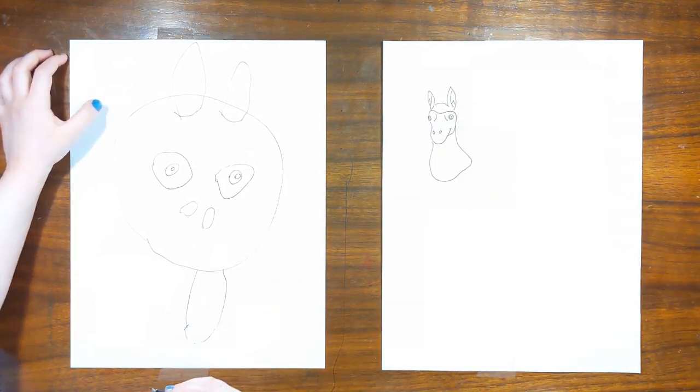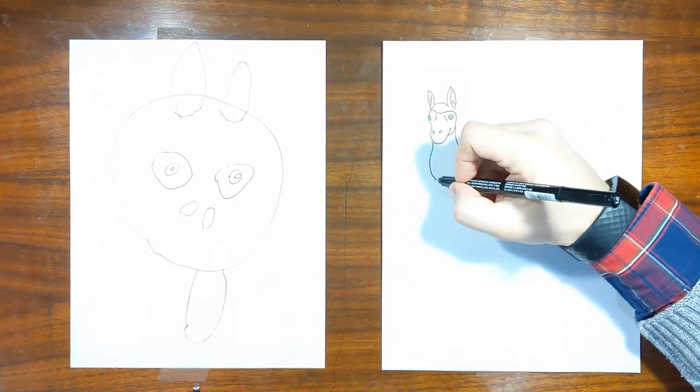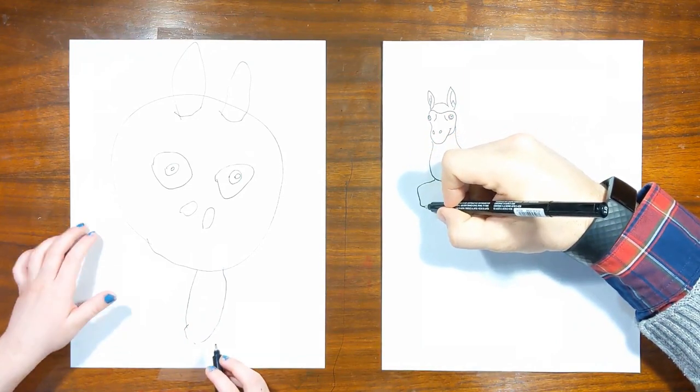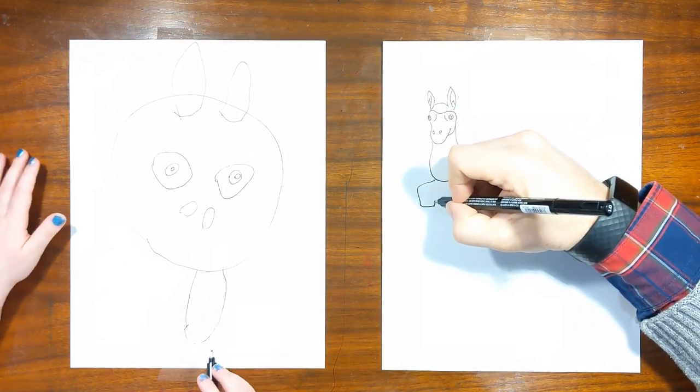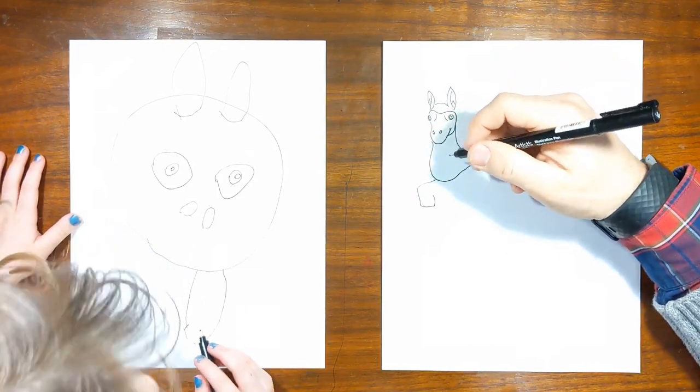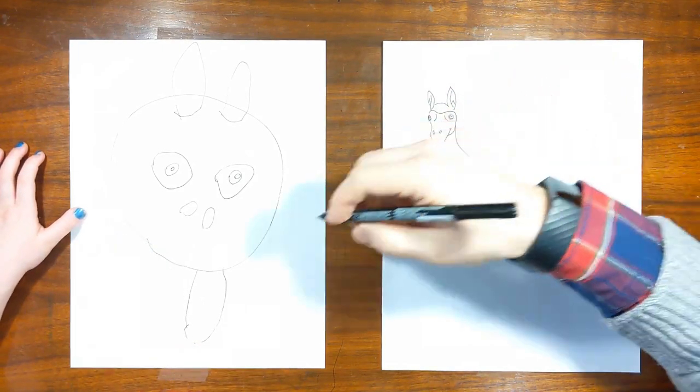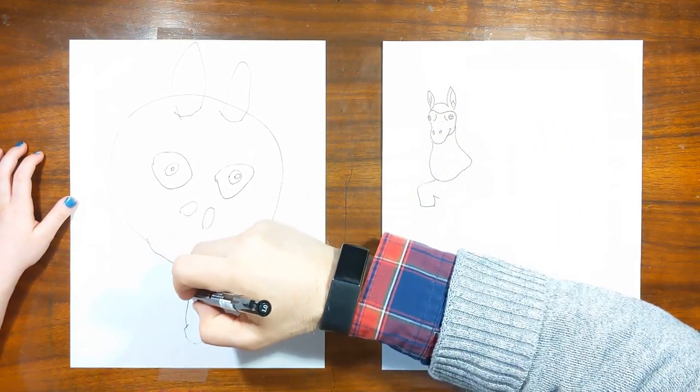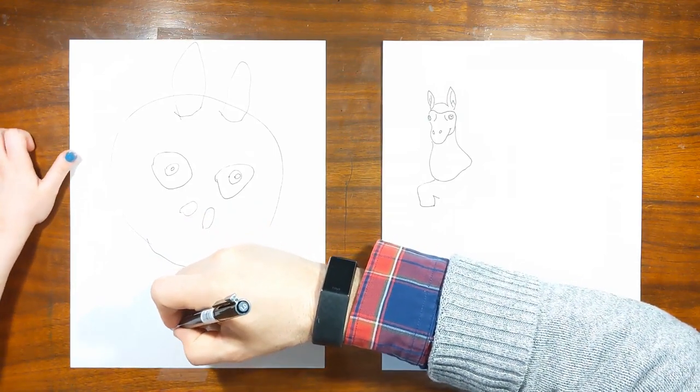Boom. Alright. Now we're gonna draw a leg. A leg. Yep. I'm gonna draw it all the way up to where the boot is. I don't know how to draw it. So draw a leg like this.